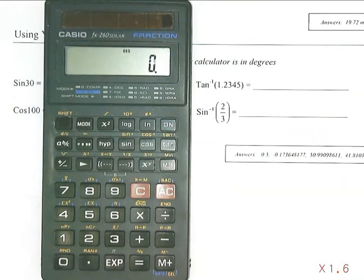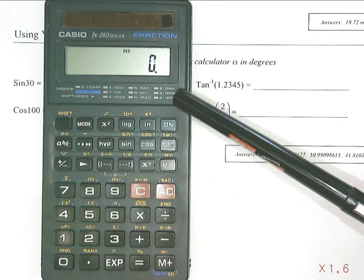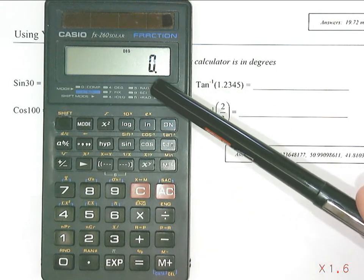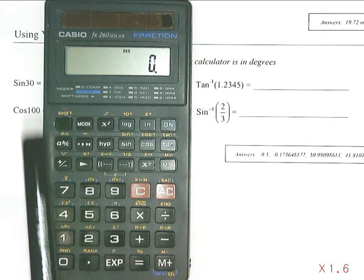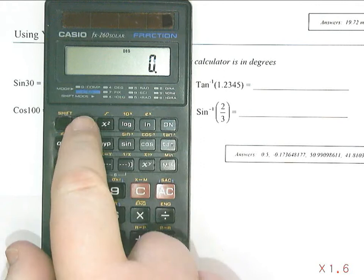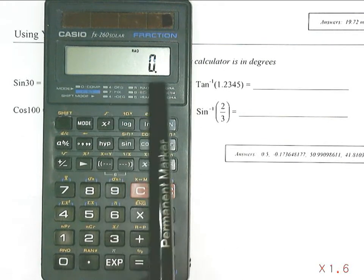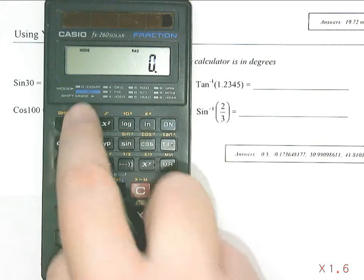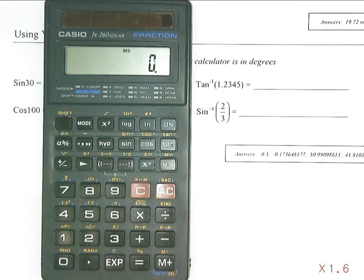This calculator is a little more challenging to change the mode. I notice up at the top, it's got degrees, radians, and gradients, and it has a number assigned to them. You use the mode button, so mode, and then if I press five, it will take it into radians. If I do mode and four, which it says up here, it puts it into degrees.